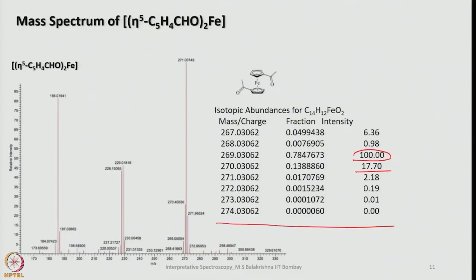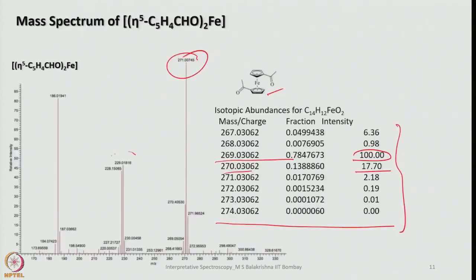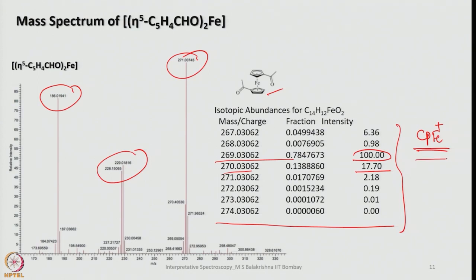Let's look at some more spectra. This is the mass spectrum of ferrocene — simulated and collected — and 100% abundant peaks can be seen at 269 and 270. For diacetyl ferrocene, the base peak is around 170 to 271, and then it fragments out. Different masses are shown: first the acetyl group comes out, then eventually the CP group comes out, stabilizing as CPFe⁺. That is the typical peak observed at the end in the case of ferrocene.